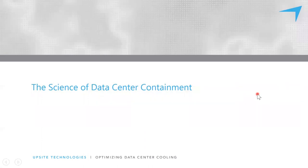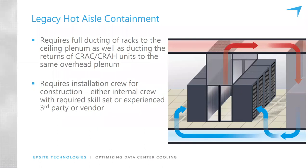Let's move into a little bit of the science of containment and show you some schematics of the airflow paths. With legacy hot aisle containment, we're fully containing the hot air, ducting it to a ceiling plenum, and that is returning to the cooling units that have also been ducted to that ceiling plenum. So we're forcing this flow path through the room.